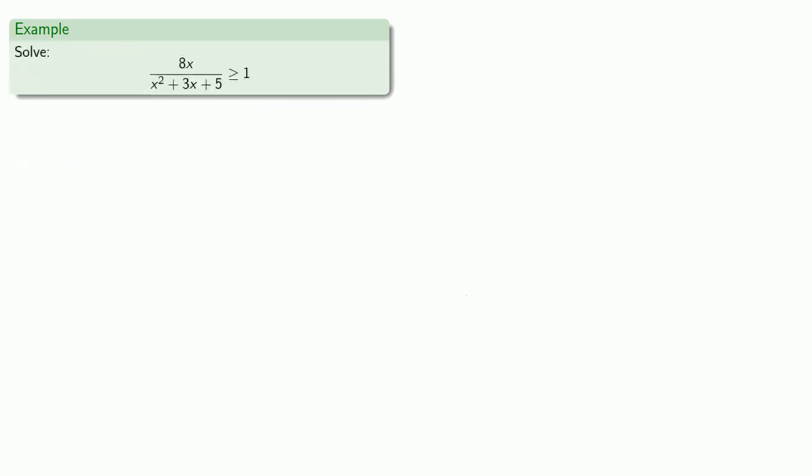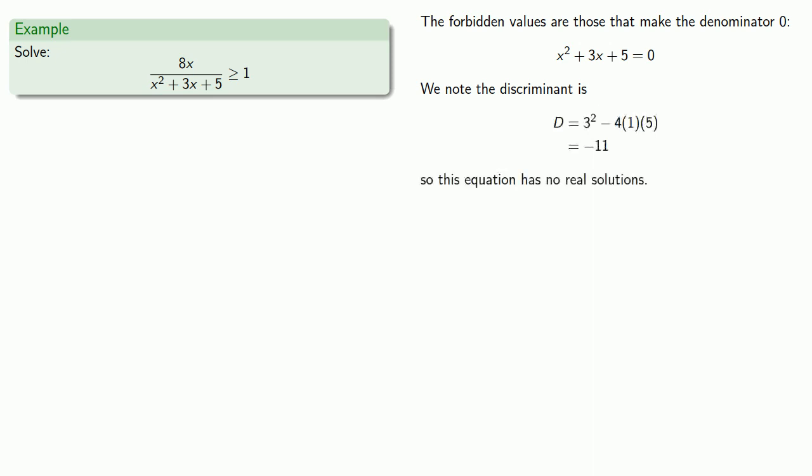Or we could try another inequality. The forbidden values are those that make the denominator equal to 0, so we'll set the denominator equal to 0 and solve. We can save ourselves a little bit of effort by noting that when we calculate the discriminant, we get a negative number, so this equation has no real solutions, and so there are no forbidden values.